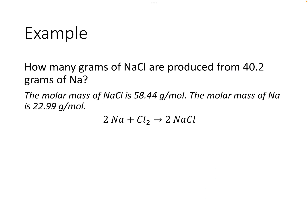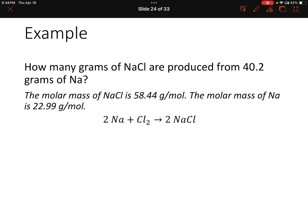Let's do one together. How many grams of sodium chloride are produced from 40.2 grams of sodium? We're using the same reaction between sodium and chlorine to create sodium chloride, and we're given the molar masses of both sodium chloride and sodium. We're solving for grams of sodium chloride, and we're given 40.2 grams of sodium — that's our starting substance.